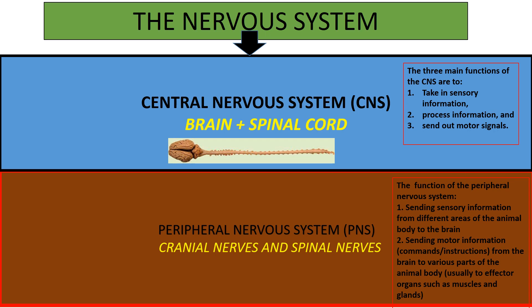The peripheral nervous system performs two major functions. The first is sending sensory information from different areas of the animal's body to the brain, or via the spinal cord.